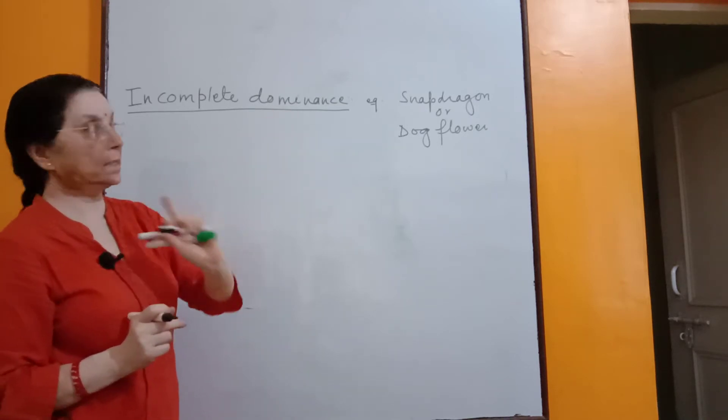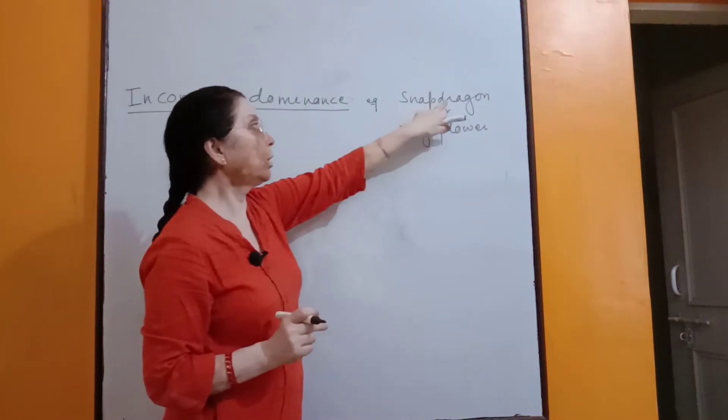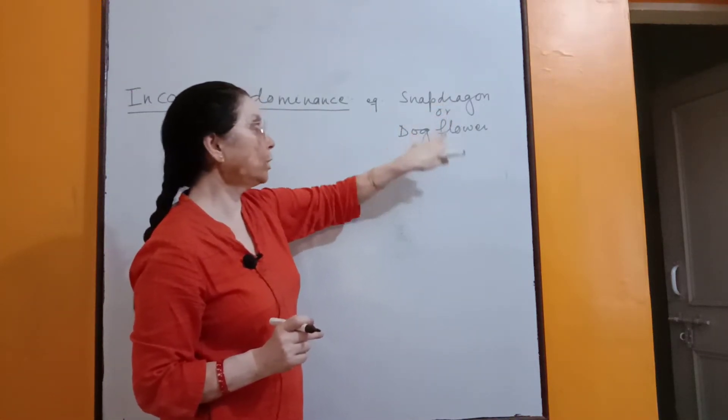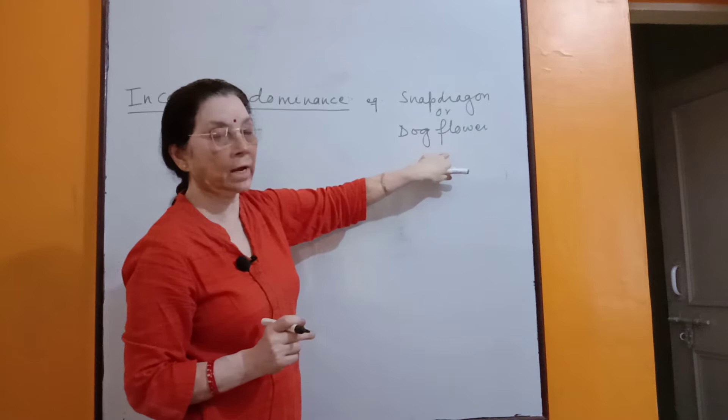First, I will give one example. In a plant called snapdragon, or we also call it as dog flower, it's a common name.